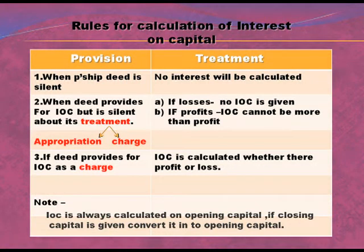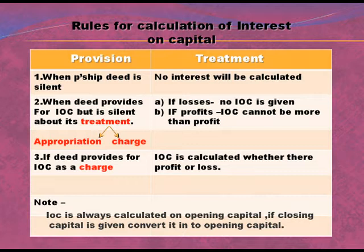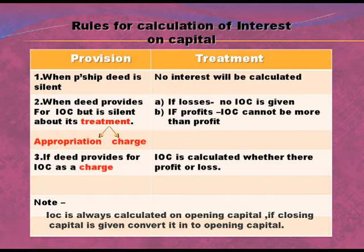If there are no profits given in the question — for example, if losses are given — then no interest on capital is given to the partners. Secondly, if profits are given, then interest on capital can be given, but not more than the profits.